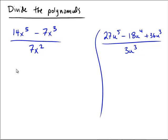The first one on the left, we have 14x to the fifth over 7x squared minus 7x cubed over 7x squared. So 14 divided by 7 is 2. And with 5 copies on top, 2 copies on the bottom, we're just going to be left with 3.